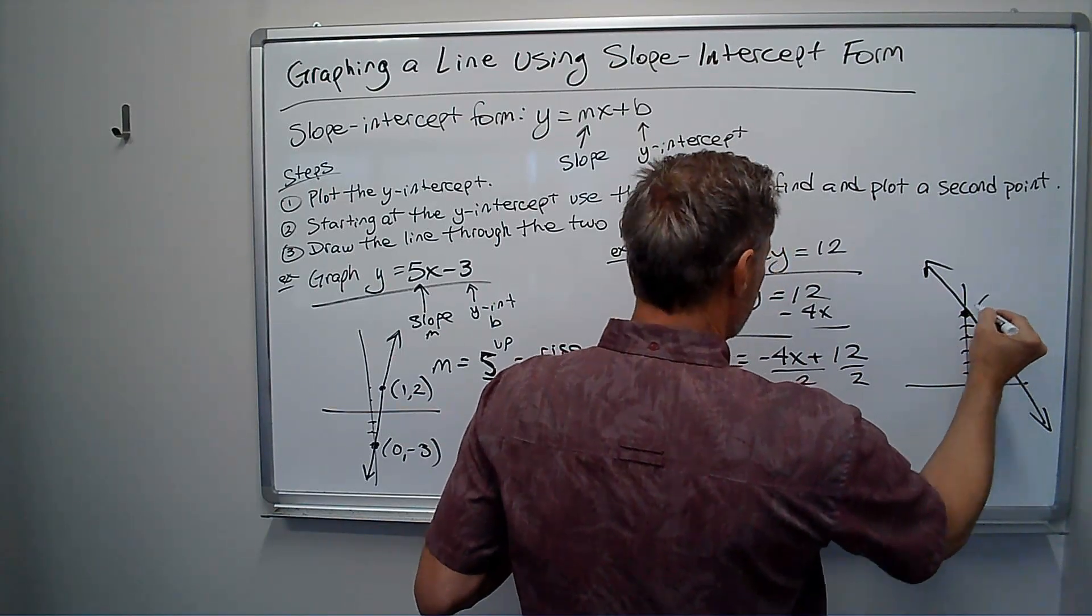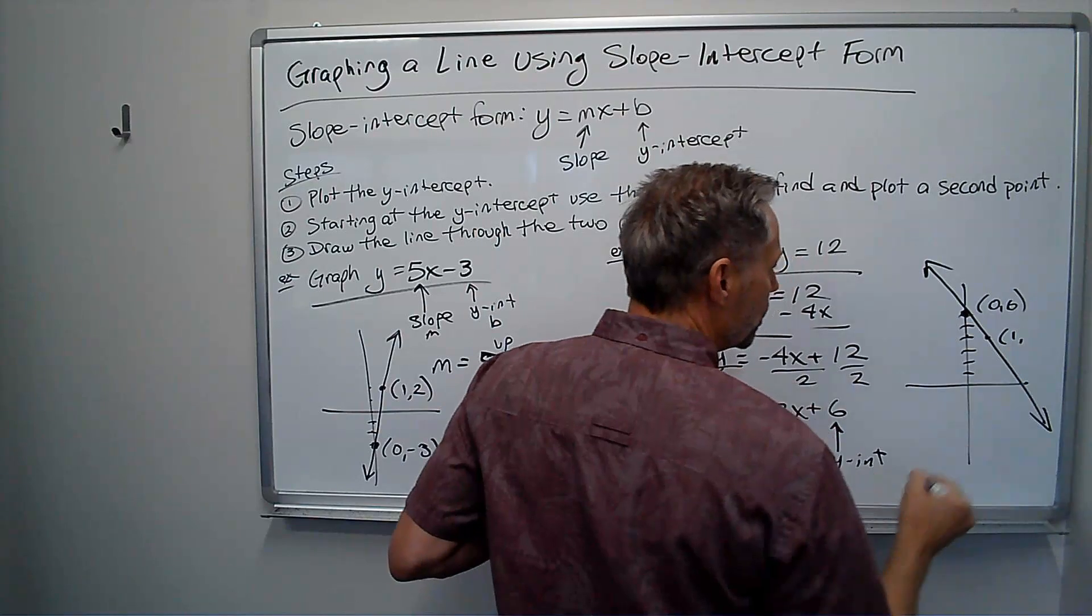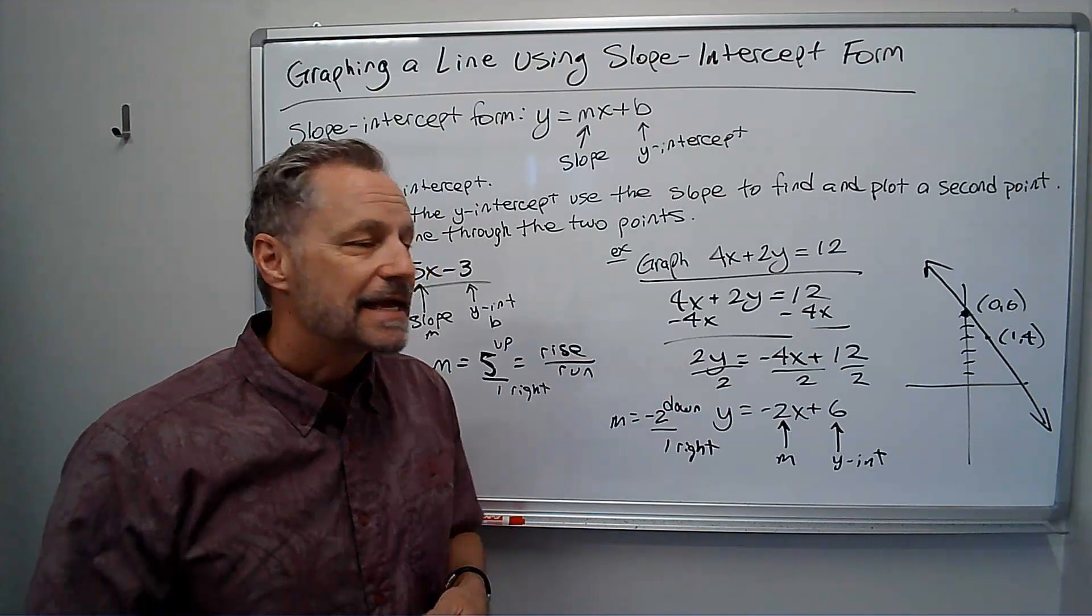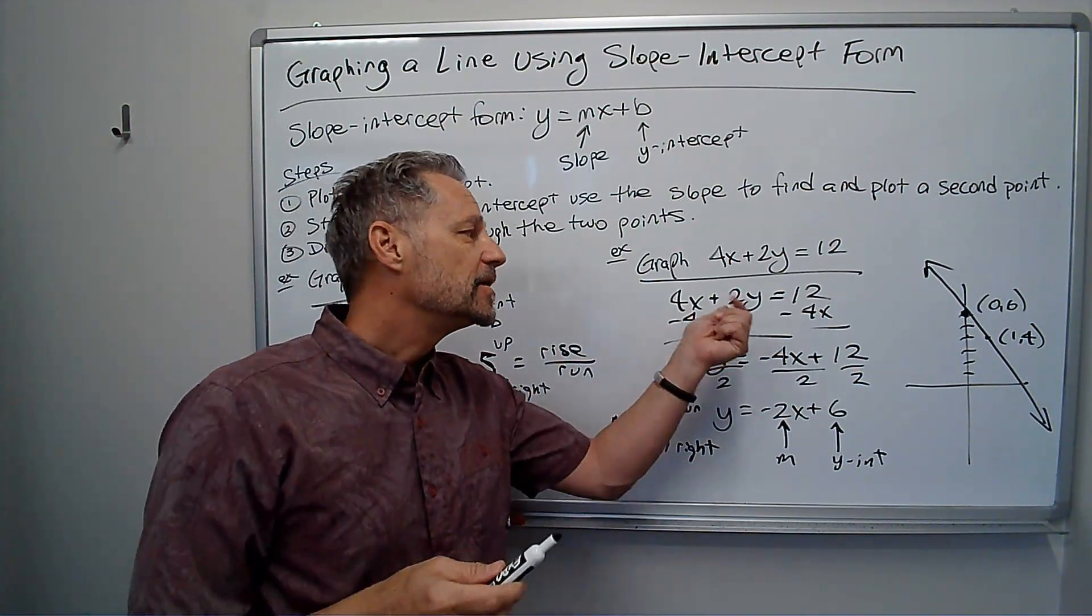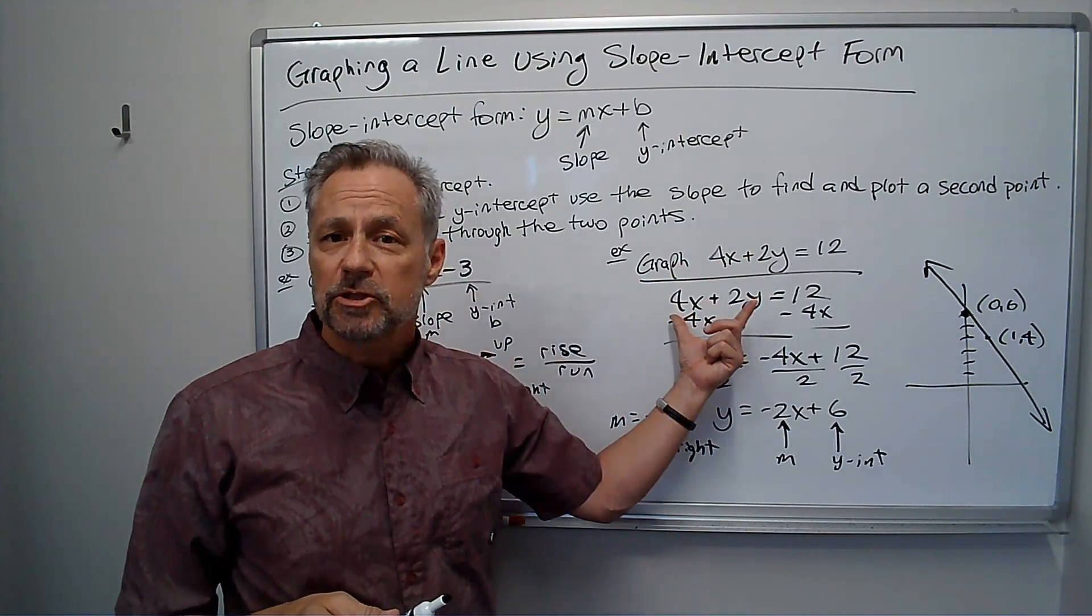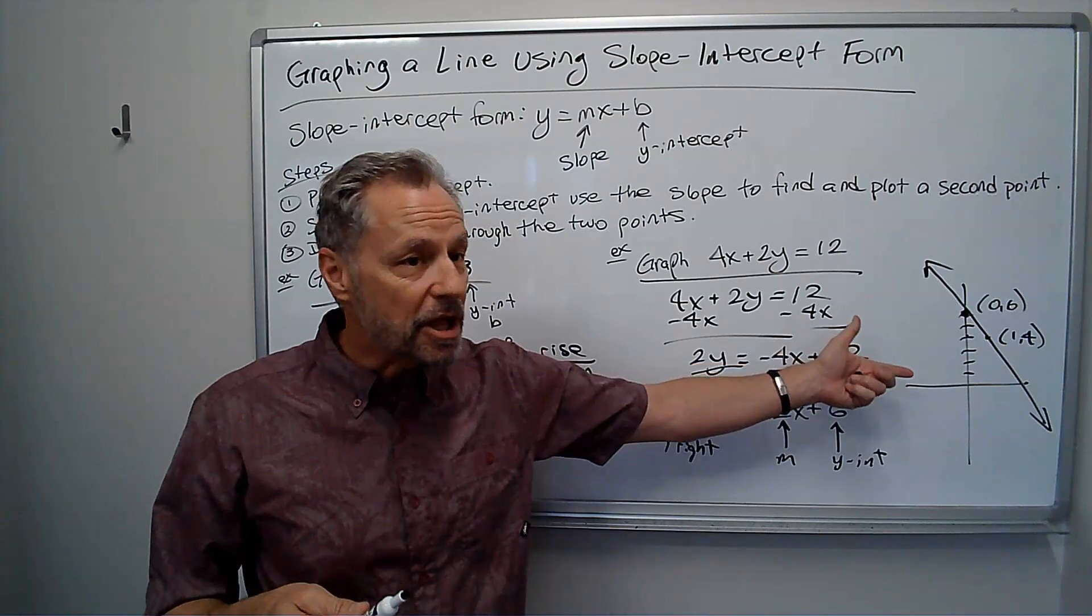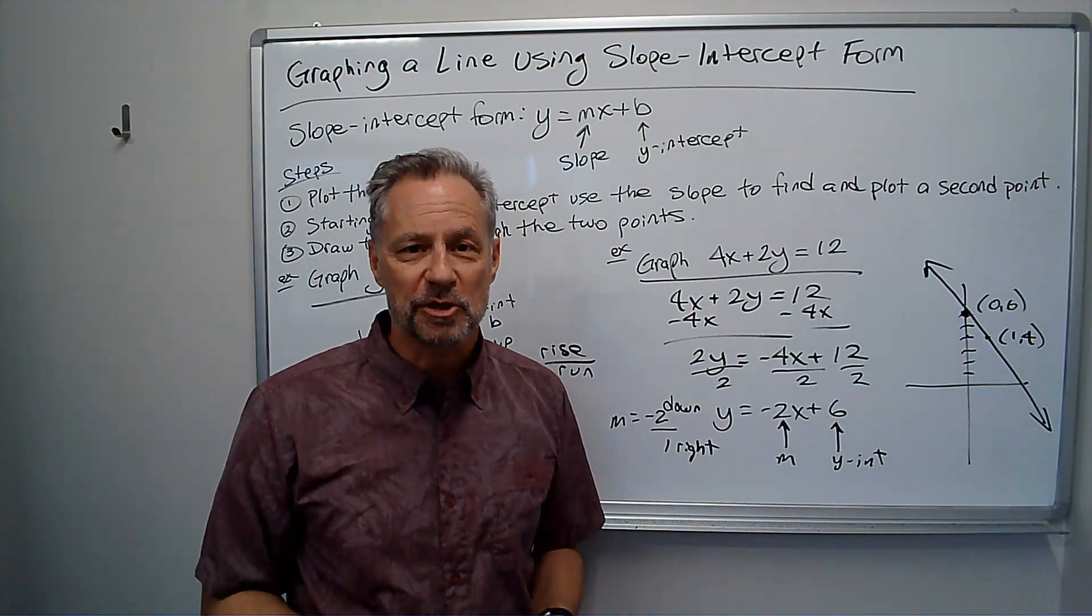Again, this point was 0, 6. I went right 1, but I went down 2, so it's 1, 4. And just as quickly as that, I can graph my line using slope-intercept form. I don't have to plot 2 points. Notice I really did plot 2 points, but it was the y-intercept plus a second point that the slope gives me.